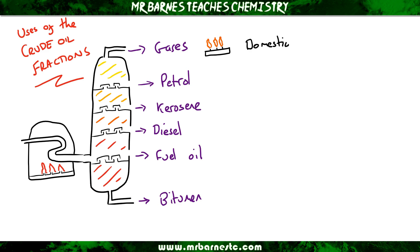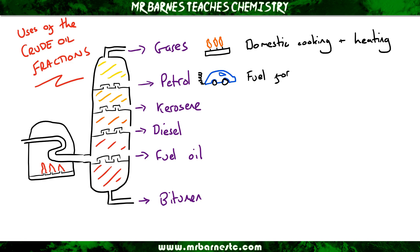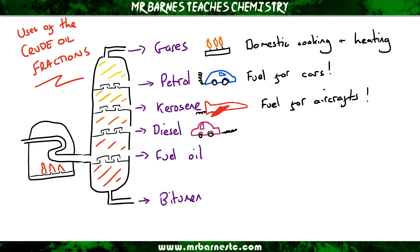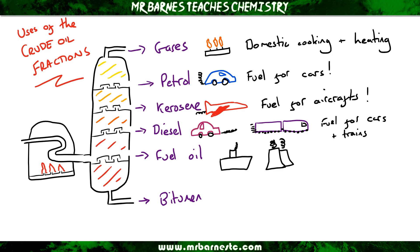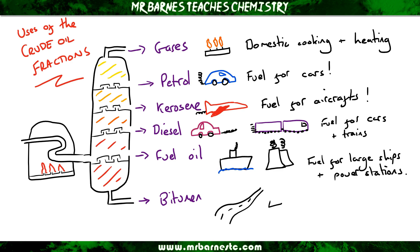So the gases are used for domestic cooking and heating. Petrol is used for fuel in cars. Kerosene is a fuel for aircraft. Diesel is a fuel for cars and also for trains. Fuel oil is for large ships and power stations, and bitumen is for surfacing roads and roofs.